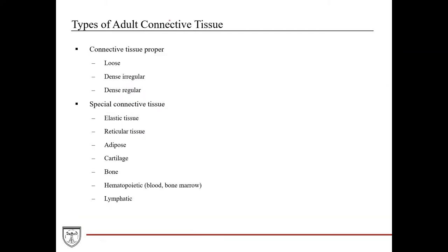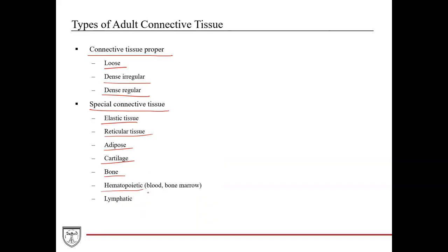To round out this lecture, we'll talk about the types of adult connective tissue. You have connective tissue proper — which includes loose connective tissue, dense irregular connective tissue, and dense regular connective tissue — and then special connective tissue, which includes elastic tissue, reticular tissue, adipose, cartilage, bone, hematopoietic tissue (blood and bone marrow), and lymphatic tissue. Each of these has dedicated lectures.